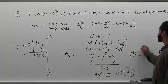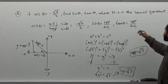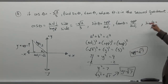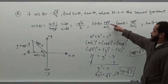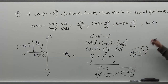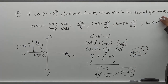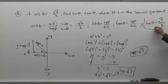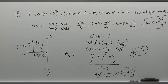Now we can fill in what we know. Sine of the angle equals opposite over hypotenuse. The opposite is radical seven and the hypotenuse is three, so sine of theta in the second quadrant equals radical seven over three.